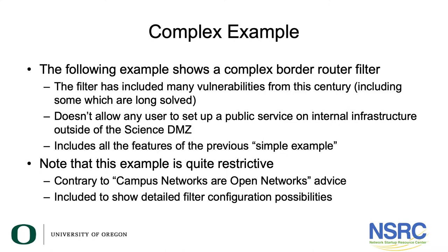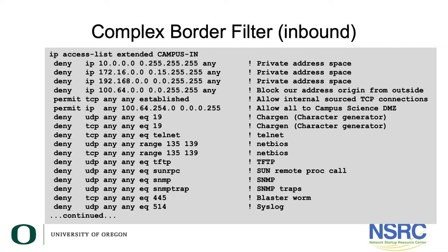We've concluded looking at the simple example; now let's look at the complex example. This one is probably more complicated than any campus needs to use and is more typically used in an enterprise network. The filter includes many vulnerabilities from this century, including some which have been long solved, and it doesn't allow any user to set up a public service on internal infrastructure outside of the science demarcation zone. It includes all the features of the previous simple example. This is actually quite a restrictive example, contrary to all the advice we've been giving throughout this series that campus networks are open networks, but we included it to show you some of the detailed filter configuration possibilities. The slide shows the first page of the complex border filter.